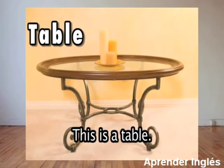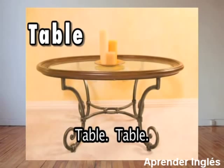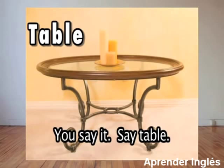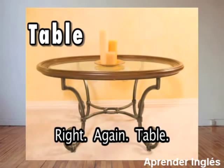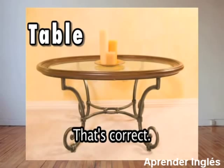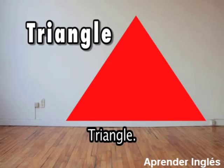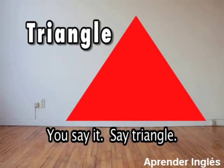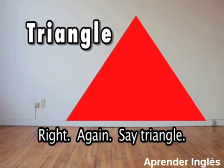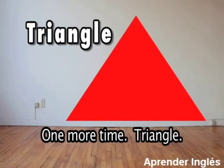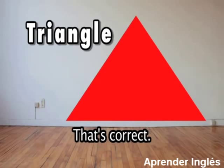This is a table — ta-ble, ta-ble. You say it, say table. Right. Again, table. That's correct. This is a shape. It is a triangle — tri-angle, tri-ang-le. You say it, say triangle. Right. Again, say triangle. One more time, tri-ang-le. That's correct.